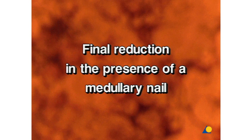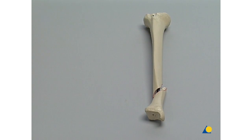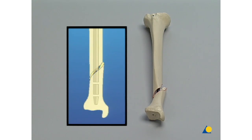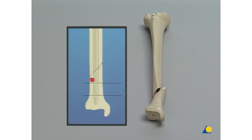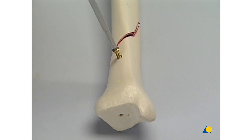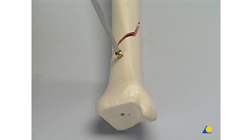Final reduction in the presence of a medullary nail. In the event of a persisting malalignment following medullary nailing of a fracture of the lower leg, final reduction can be accomplished before insertion of the locking bolts by means of a pointed reduction forceps inserted through the skin. The reduction can also be forced by using a MISA nail screw: by inserting a MISA nail screw, the bone and the screw are both pushed away from the nail, which is tightly anchored in the proximal main fragment.